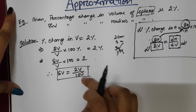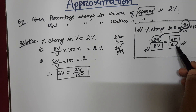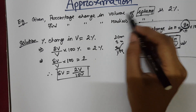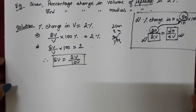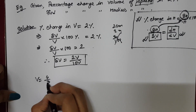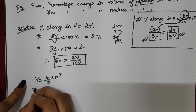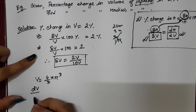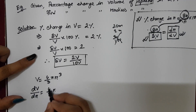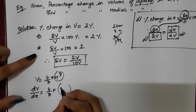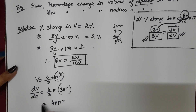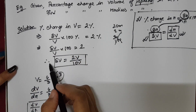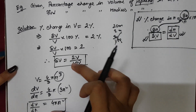The next thing we need is dv by dr. Since this is a sphere, the volume of a sphere is 4 by 3 pi r cubed. Differentiating volume with respect to r: dv by dr equals 4 by 3 pi multiplied by 3r squared. The 3's cancel out, giving dv by dr equals 4 pi r squared. So we have now found both del v and dv by dr.